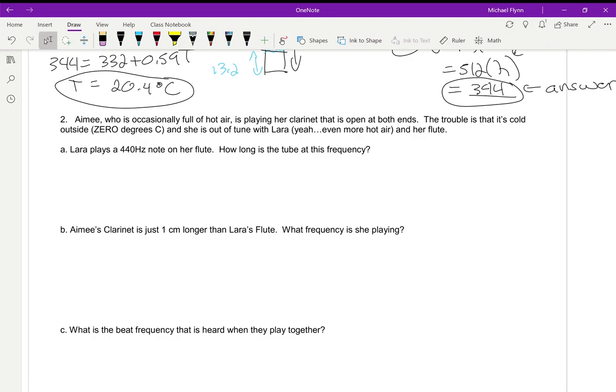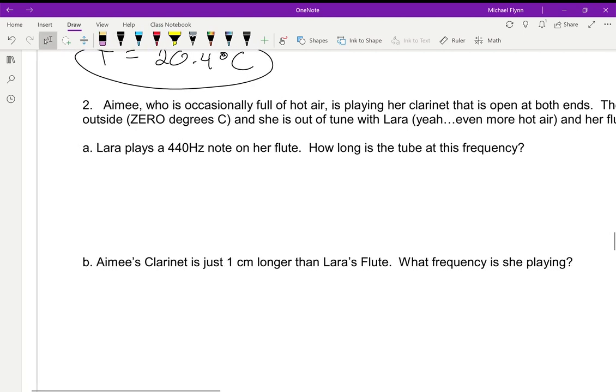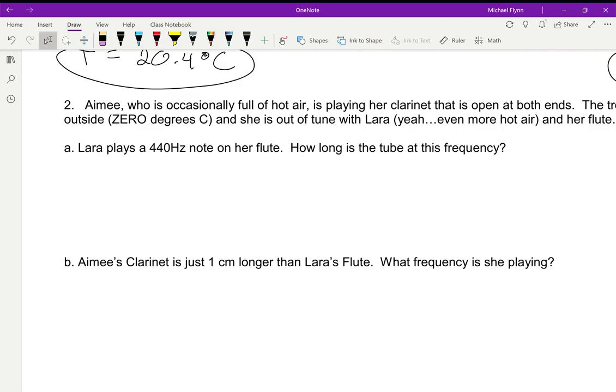Alright, Lara plays 440 Hz on her tube. How long is the tube at this frequency? By the way, all musical instruments are open air columns. It says that in the question, and we're going to assume the first harmonic if it doesn't say anything. So first, find the speed of sound with the temperature: 332 plus 0.59T. T is zero, so that goes away. We just get 332 meters per second. That is step one.